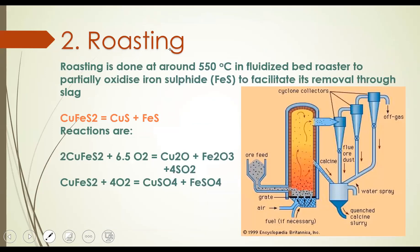We have removed some amount of gangue or unwanted particles, and now we take this clean ore to the next process: roasting. In roasting, we heat the ore at 550 degrees centigrade. At this temperature, the FeS contained in CuFeS2 is partially oxidized — it partially produces Fe2O3 and Fe3O4. The CuS also gets oxidized to Cu2O.